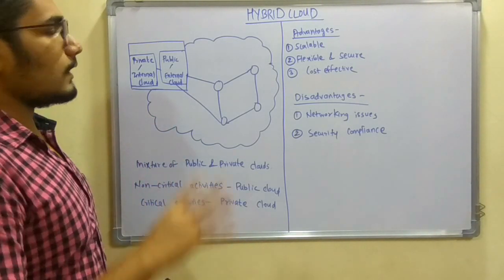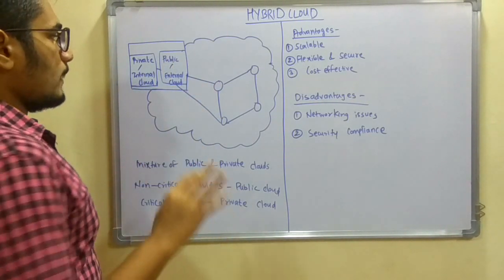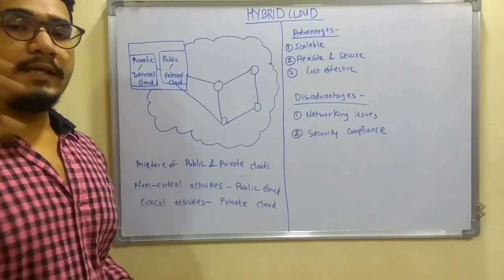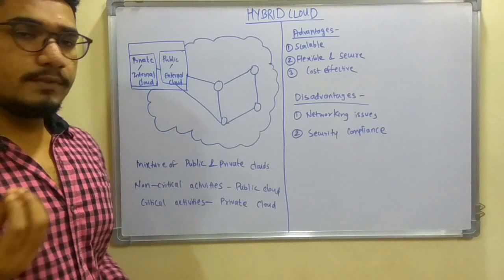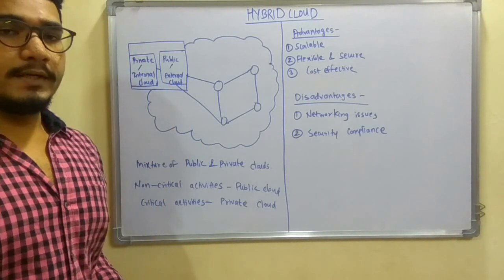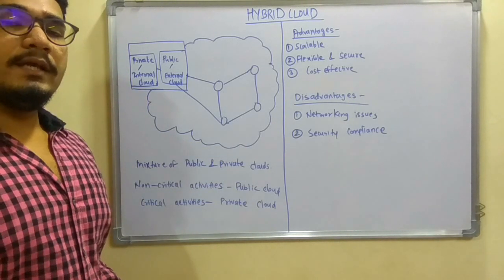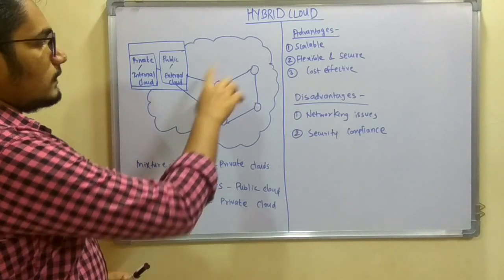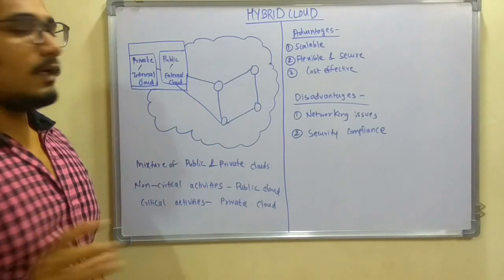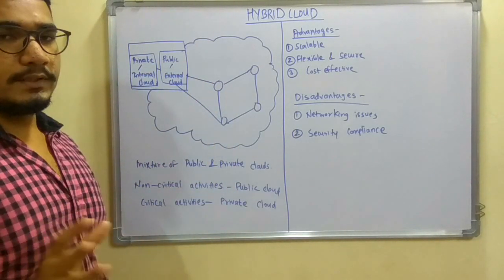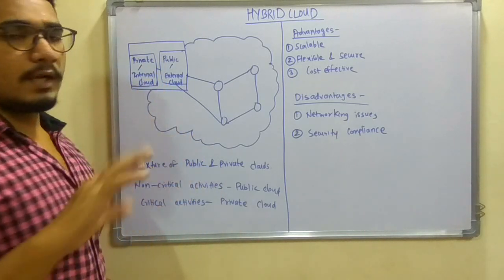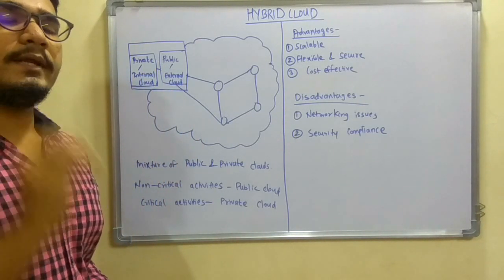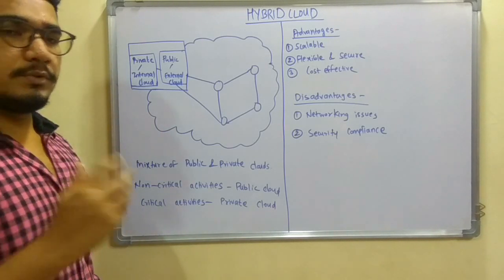Let's understand this with an example. In a hybrid cloud setup, organizations internally use a privately hosted private cloud and keep the public cloud as an external service. Whenever mission-critical activities occur, they are handled in the private cloud, while non-critical activities are done on the public cloud side. These two services are accessed over the cloud and both rely on the same organizational premises.